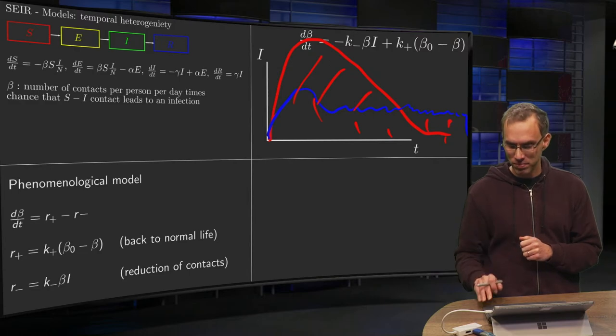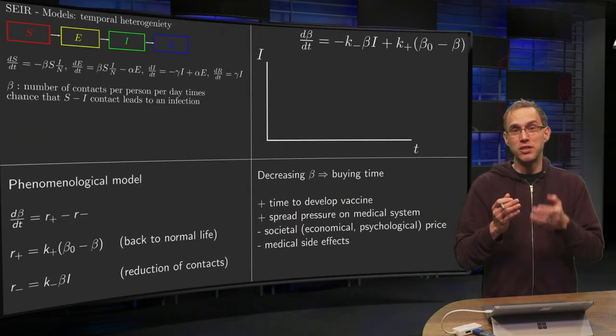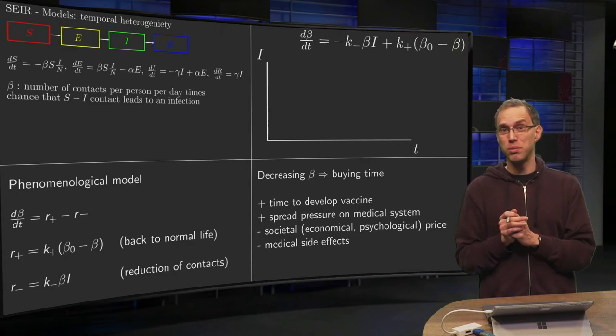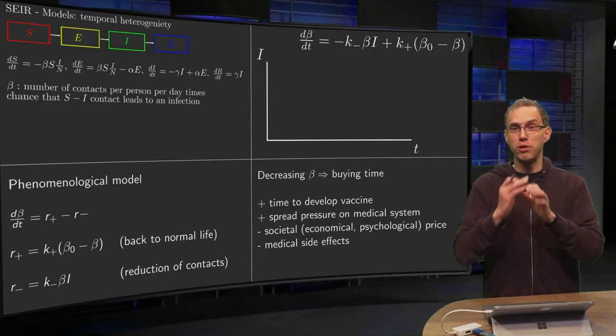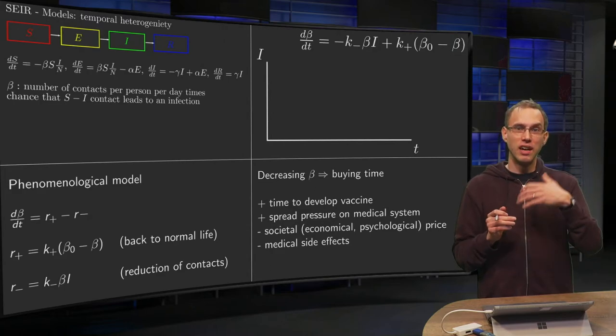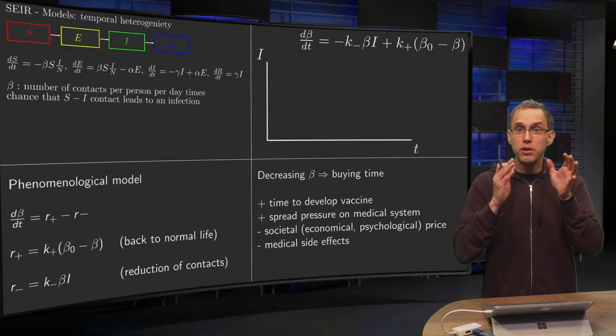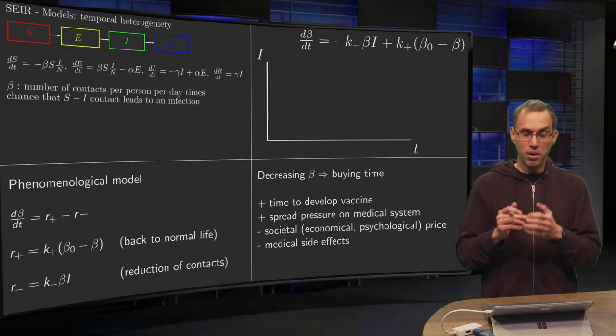So what's the use of that? Decreasing beta, decreasing the number of contacts—the only thing you're doing here is buying some time. Is it worth it? Well, suppose you have some new disease for which you don't have a vaccine. You buy time to develop a vaccine.